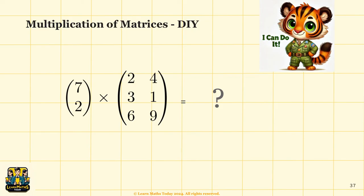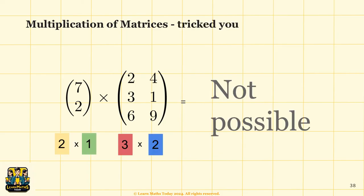Now one more exercise: try multiplying these two matrices together. This is actually a trick question because the multiplication is not possible. This is because the dimensions do not match — the first matrix has a dimension of 2 by 1 and the second matrix has a dimension of 3 by 2. The number of columns of the first matrix is 1, but the number of rows of the second matrix is 3, so this multiplication is not possible.